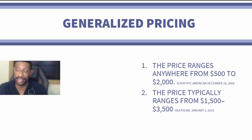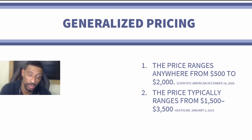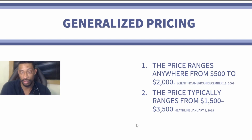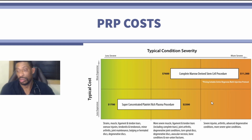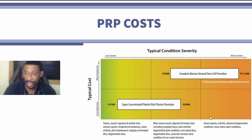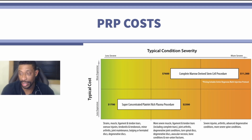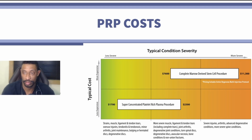Generalized pricing back in 2009 was somewhere from $500 to $2,000. As more studies have shown improved efficacy, that price has increased to an average of $1,500 to $3,500 for a traditional injection. When looking at those costs, one must consider what makes sense for using PRP with ligament and tendon tears versus what may need another type of orthobiologic.